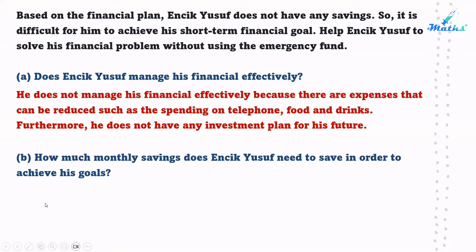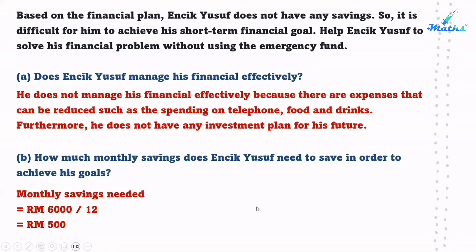Question B: How much money does Enjad Yusuf need to save in order to achieve his goal? The computer costs $6,000, so we divide $6,000 by 12 months. The monthly savings needed is $500 per month.